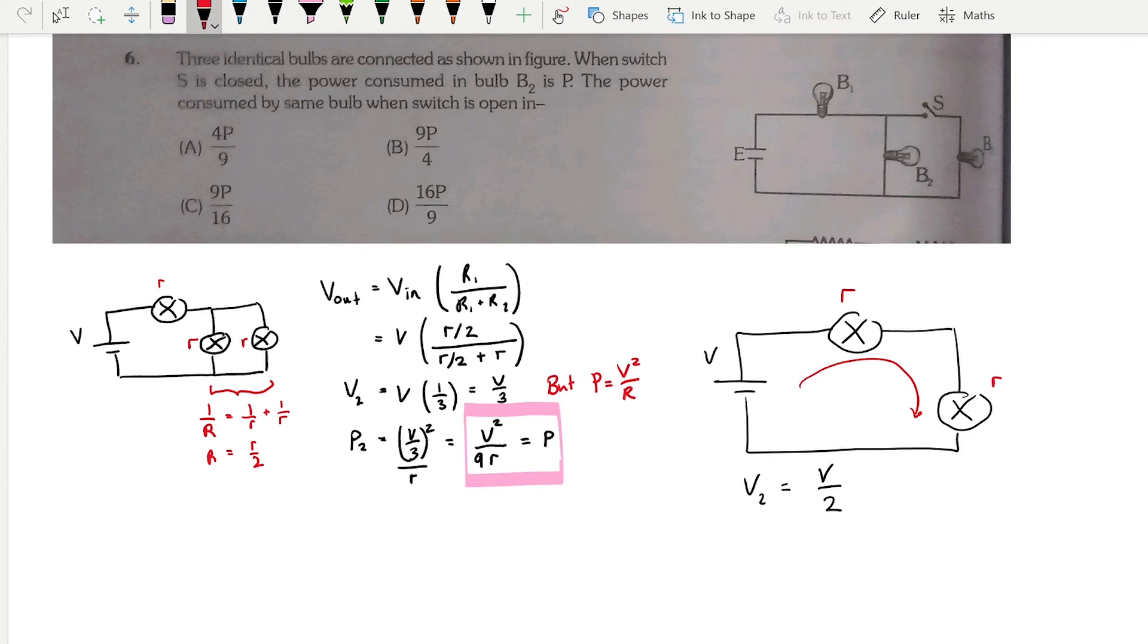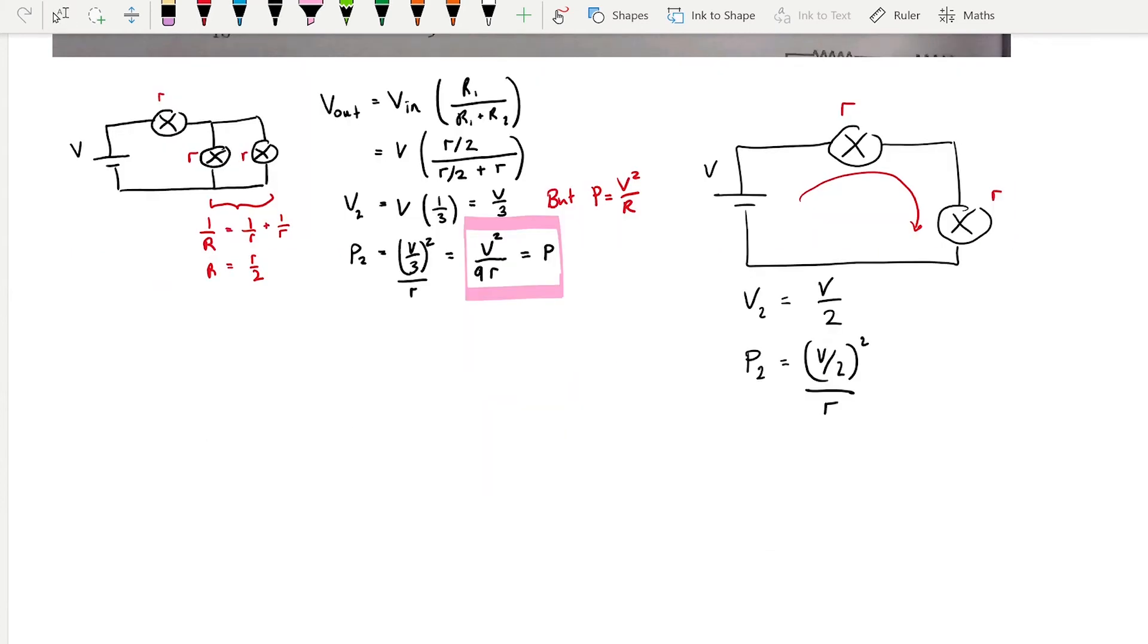We are going to use the power equation again. The power across bulb number 2 is equal to the voltage across this bulb squared divided by its resistance. So that would be v over 2 all squared divided by small r. So simplifying this, that is going to give us v squared over r times by 1 over 4. So simplifying this, we have p2 is equal to a fourth times by v squared over r. That is the second expression that we need.